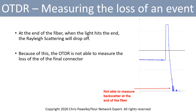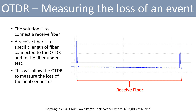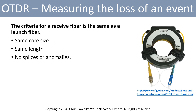At the end of the fiber, when the light hits the end of the fiber, the Rayleigh scattering will drop off. Because of this, the OTDR is not able to measure the loss of the final connector. The solution is to connect a receive fiber — a specific length of fiber connected to the OTDR and to the fiber under test — which will allow the OTDR to measure the loss of the final connector. The criteria for a receive fiber is the same as a launch fiber: you must have the same core size as the fiber under test, it must be the same length as the launch fiber, and it cannot have any splices or anomalies within it.